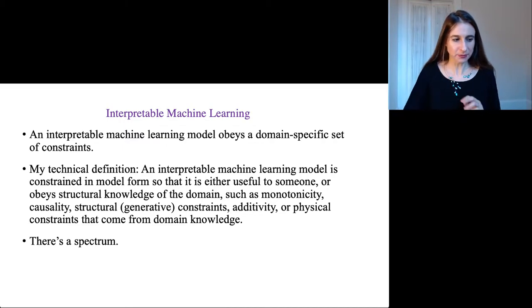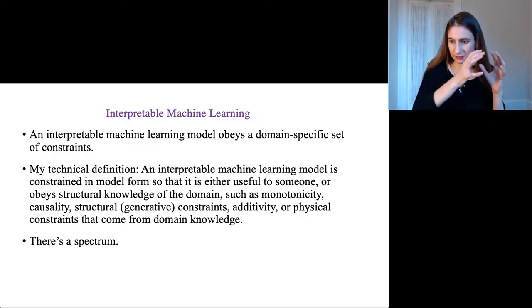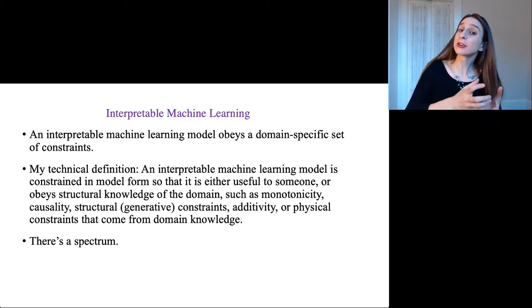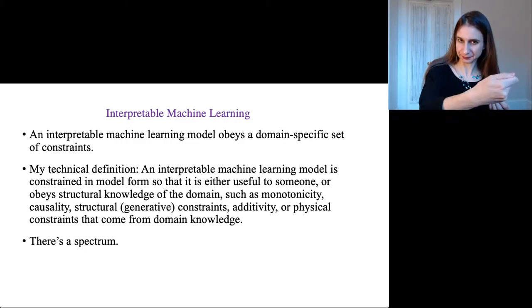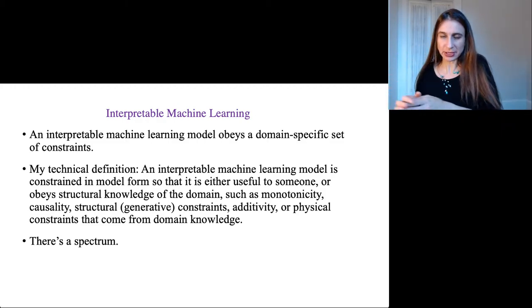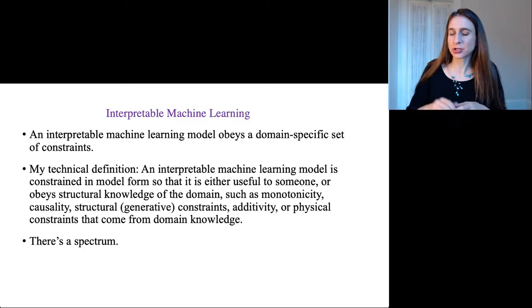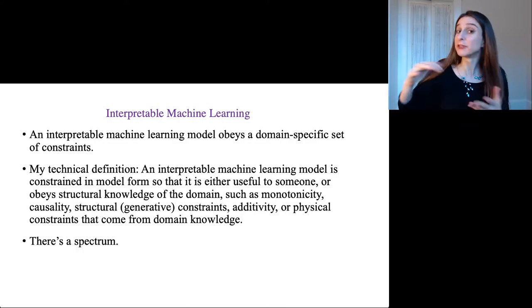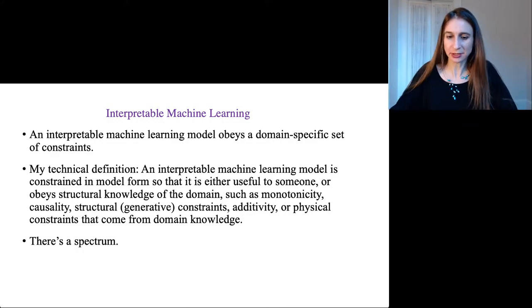There's a spectrum between models that are very sparse and interpretable, where you understand exactly how the variables jointly come together to form the predicted outcome, and models that are just loosely constrained, so that for instance they might increase monotonically along one variable.